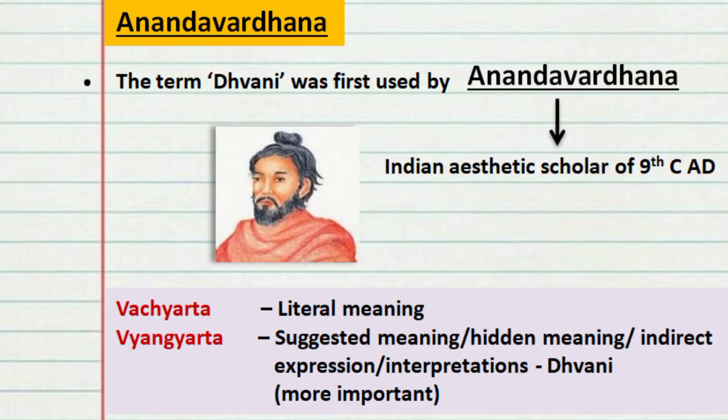Anandavardhana is an Indian Aesthetics scholar of the 9th century. He is the one who used the term Dhvani for the first time.